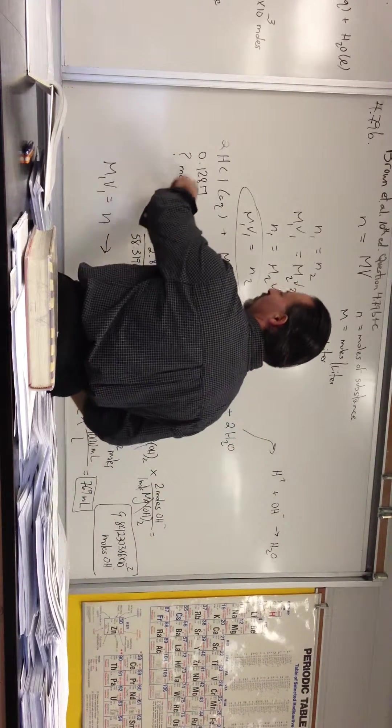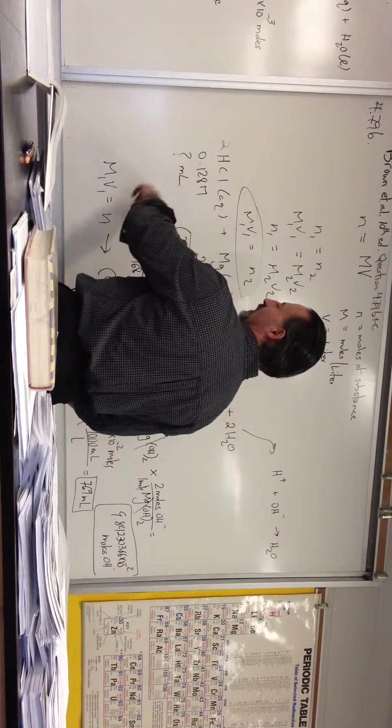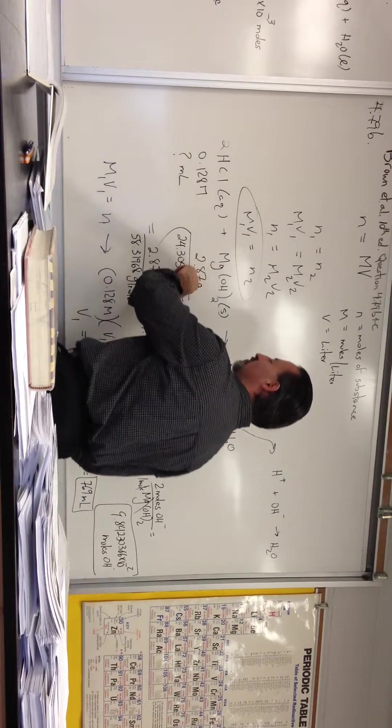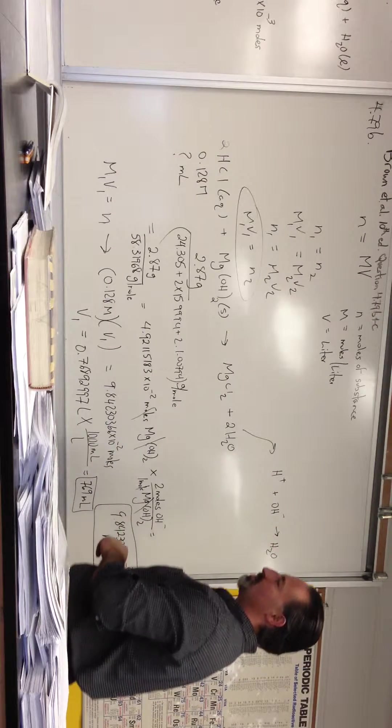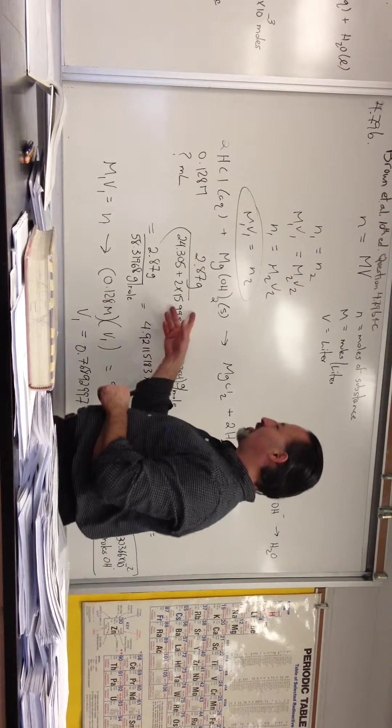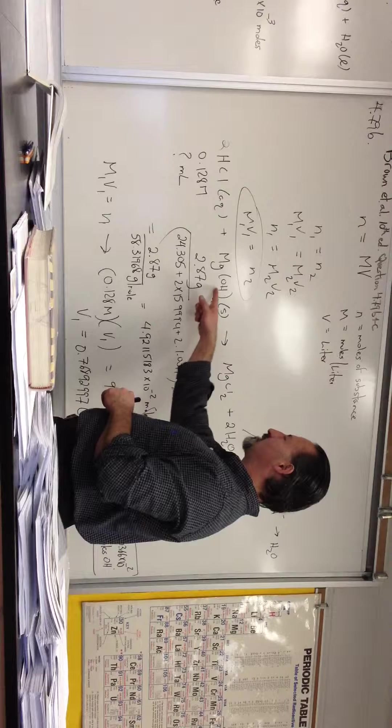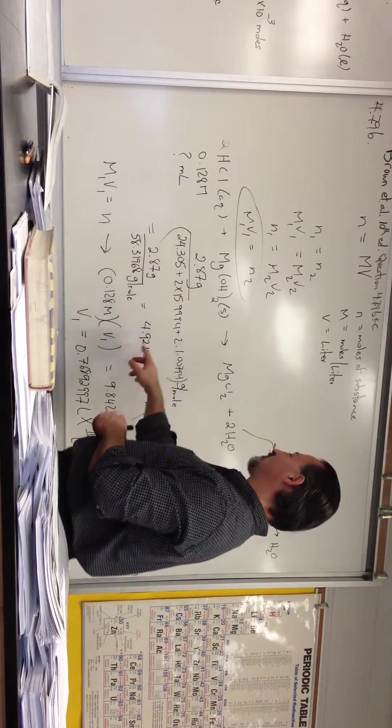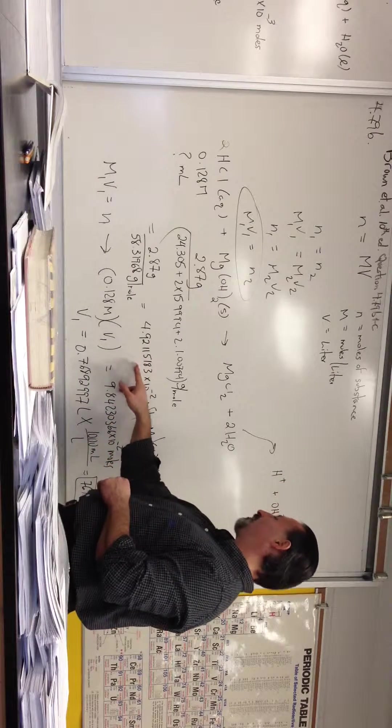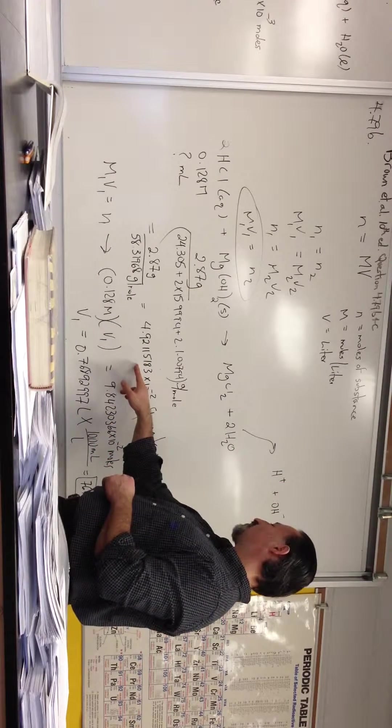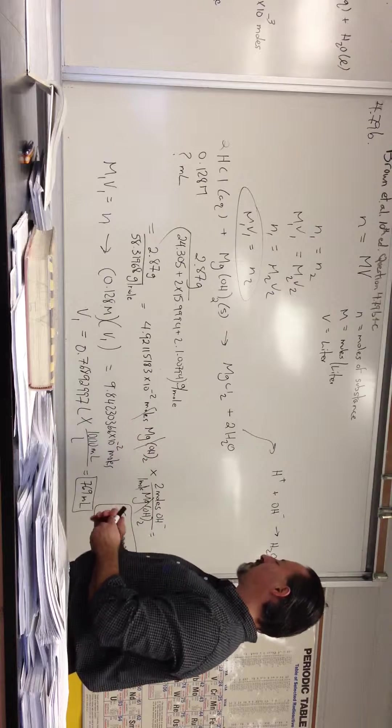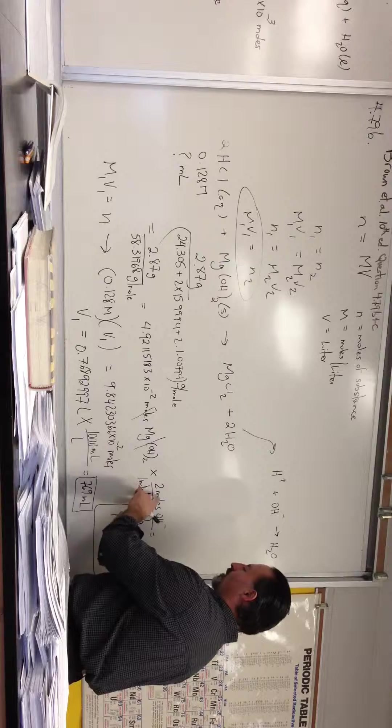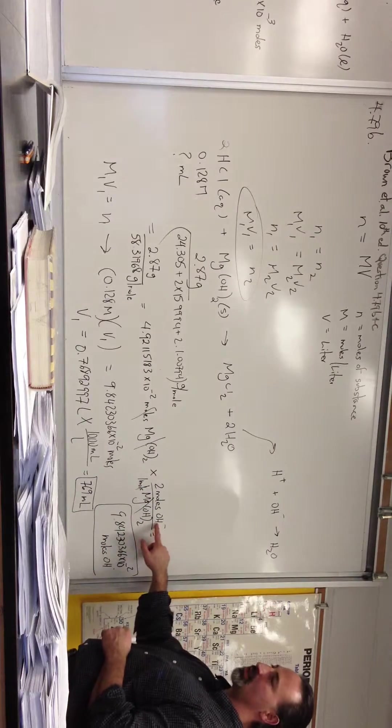The data tells us we have 0.128 molar solution of hydrochloric acid, and we're asked how many mLs of that hydrochloric acid is going to be needed to titrate 2.87 grams of magnesium hydroxide. The first step is to find out how many moles of magnesium hydroxide we have. Here's the mass, here's the molar mass. Mass divided by molar mass gives you the number of moles. So we have 4.9 times 10 to the minus 2 moles of magnesium hydroxide.